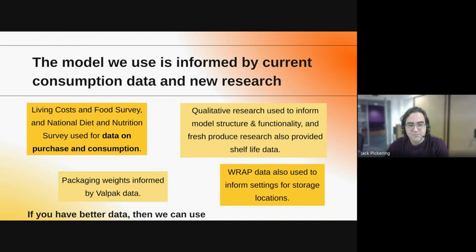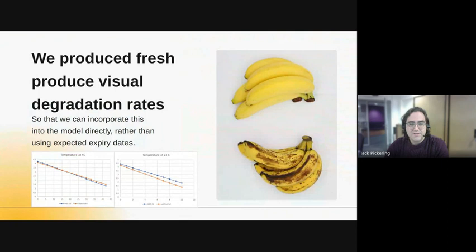One work package involved fresh produce testing and used organoleptic evaluation to establish scores for produce at different stages of degradation over time. With these scores, we were able to create rates of degradation for different storage conditions. You can see an example of this — the four-degree temperature degradation rate is much slower than the rate for grapes at 23 degrees, and the presence of lids on the grapes also has an impact on that rate. We incorporated these rates into the model so that degradation rates change depending on the storage location — a dynamic degradation approach rather than relying on an absolute shelf-life number alone.